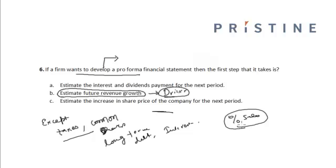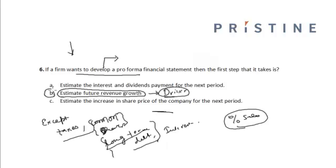In that case, we can generate a financial surplus or financial deficit. If the value of assets is greater than liabilities plus owner's equity, or if assets are less than liabilities plus owner's equity, then we decrease or adjust the long-term debt accordingly. In the second iteration, we change items such as common shares or long-term debt depending on whether we have a financial surplus or deficit after the first iteration. So the starting point is estimating future revenue growth — hence, option B is the correct answer.